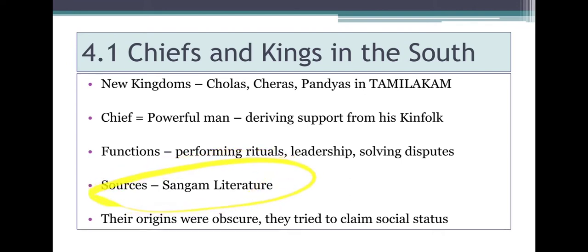The Sangam texts are important sources. Just as in Northern India we have the Vedas composed in Sanskrit, for the South Indians in the Tamil region we have the Sangam texts. Sangam literally means confluence — when two or more things come together. The Sangam texts consist of different types of poems written by different people. They describe the chiefs and the ways in which they acquired and distributed their resources. This is what is mentioned in Sangam literature, which we will study further in the third chapter.